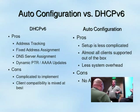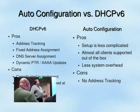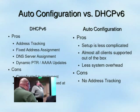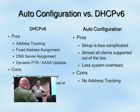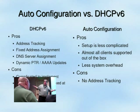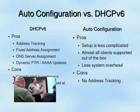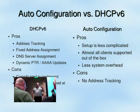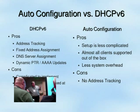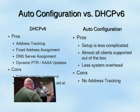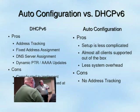The reason I don't need DHCPv6 is I've got auto-configuration. The pros of auto-configuration are that setup is much less complicated, almost all clients support it out of the box, and there's less system overhead. The cons are that you can't track addresses by MAC address, and there's limited ability to push down DNS server information — though there are protocols available for it under another RFC, you have to run daemon software on the client to accept that.